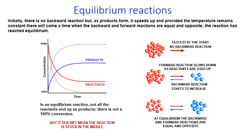In an equilibrium reaction, initially there is no backward reaction because there are no products. But as the products begin to form, the backward reaction begins to increase in magnitude. Provided the temperature remains constant, there will come a time when the backward and forward reactions are both equal and opposite — the reaction has reached equilibrium. The rate of formation of products equals the rate of formation of reactants from the products. So in an equilibrium reaction, not all reactants end up as products — there is not 100% conversion.